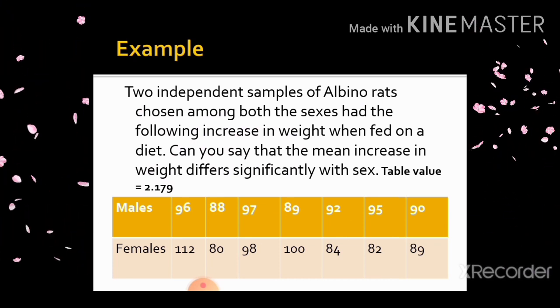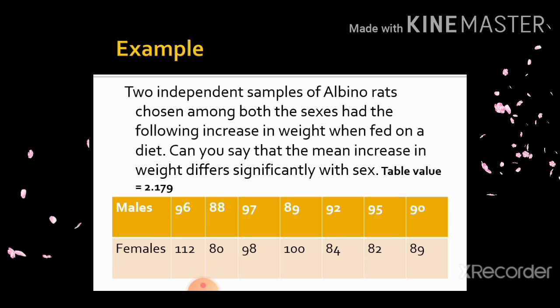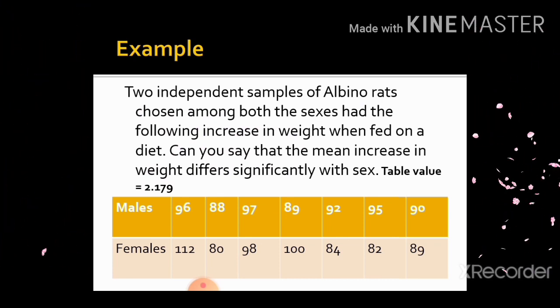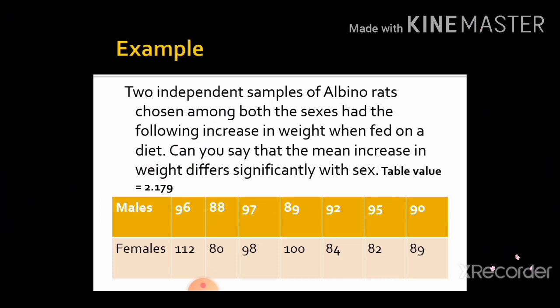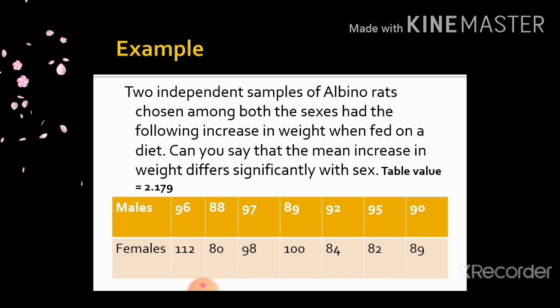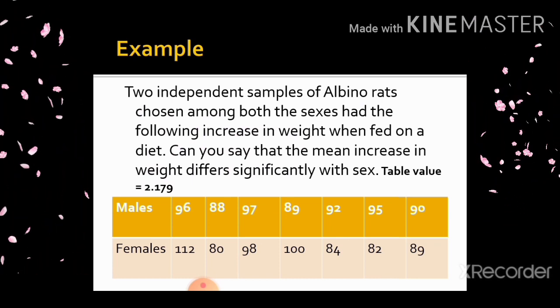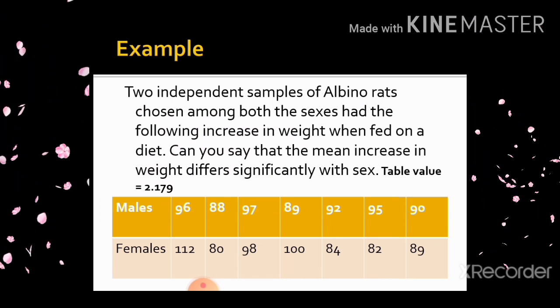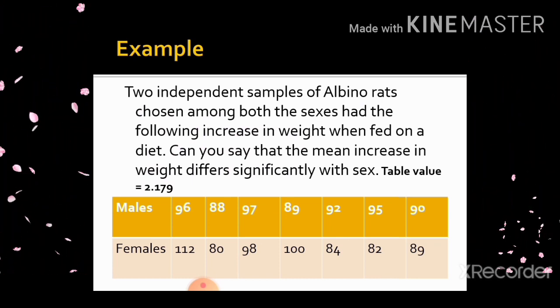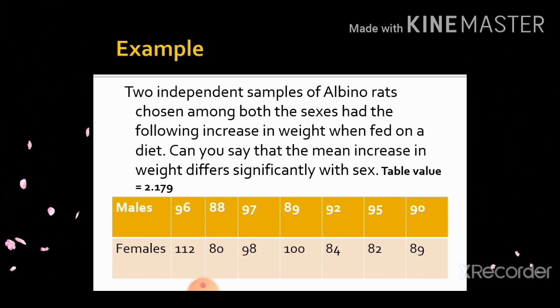Let us see the example. Two independent samples of albino rats chosen among both sexes had the following increase in weight when fed on a diet. Can you say that the mean increase in weight differs significantly with sex? The table value is 2.179.